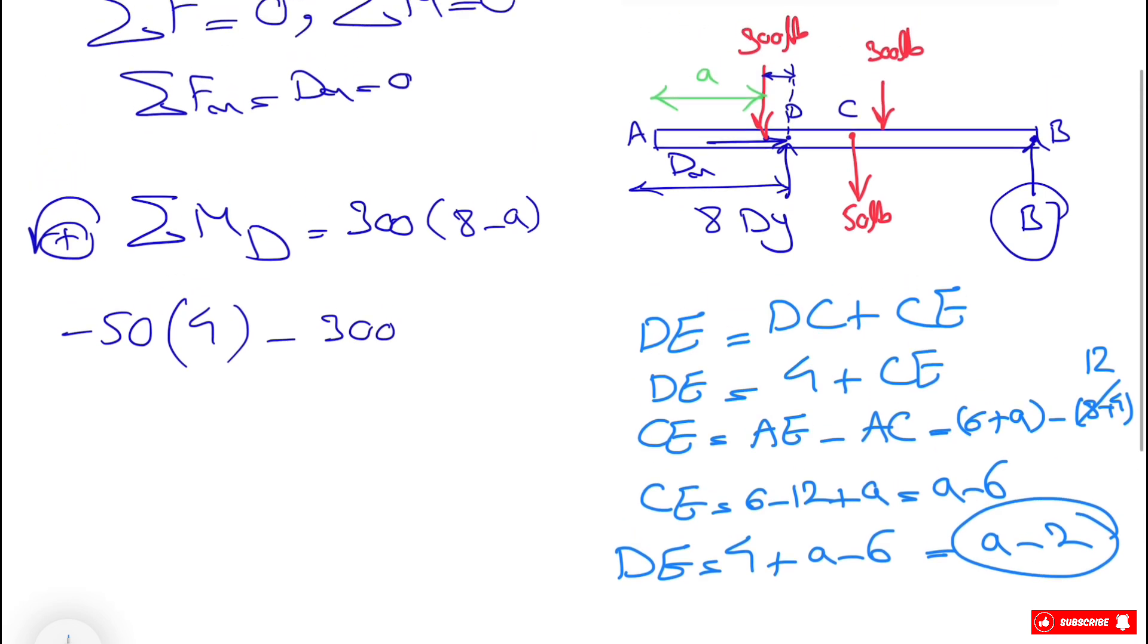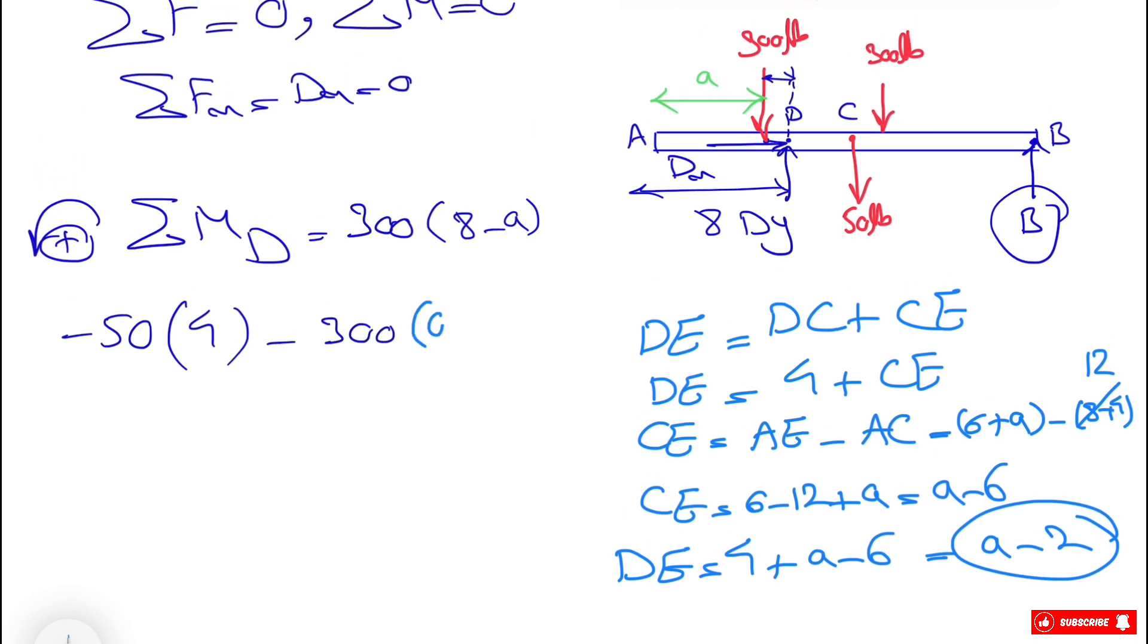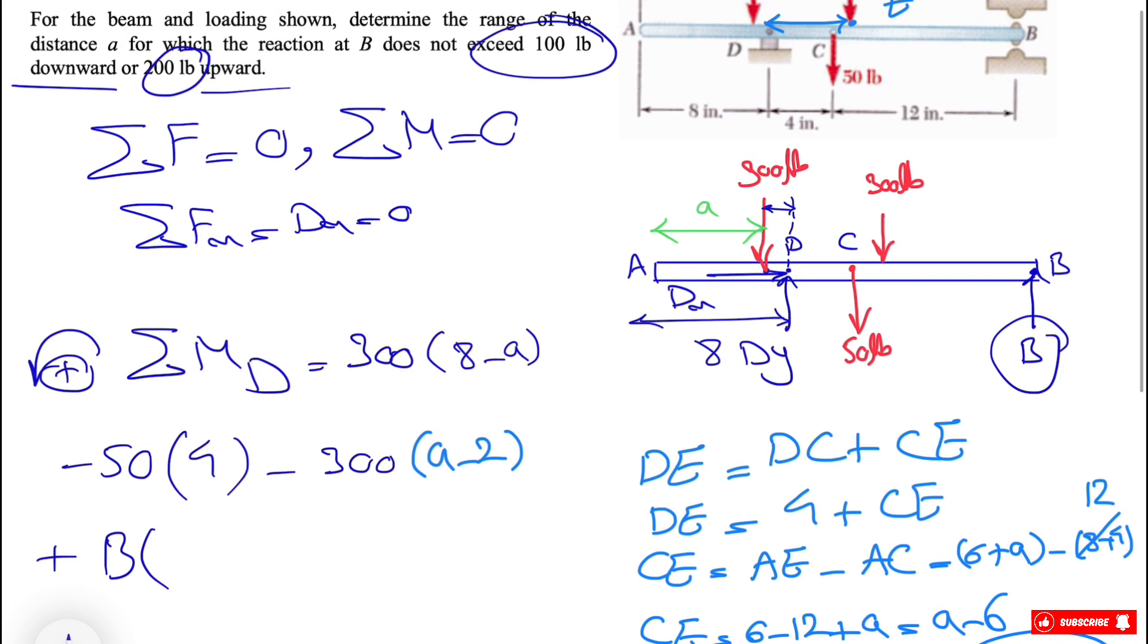So here our distance will be a minus 2. And we also have the moment of the force B, which is counterclockwise, so we have positive B. The distance will be simply what we have from D to B, which is 12 plus 4, which is 16.